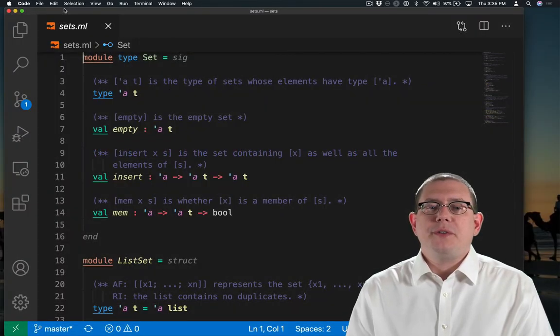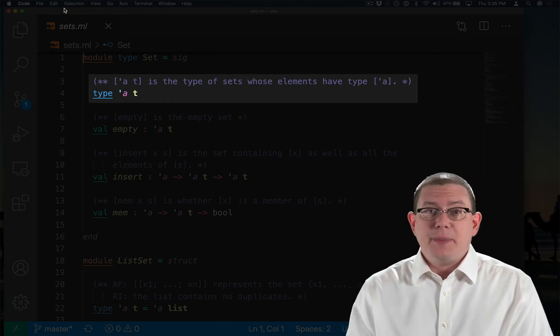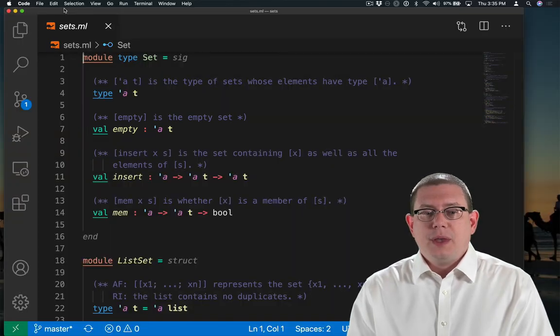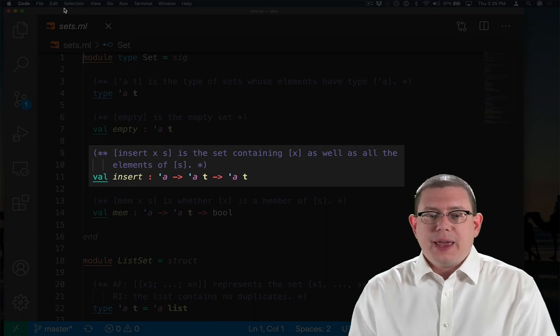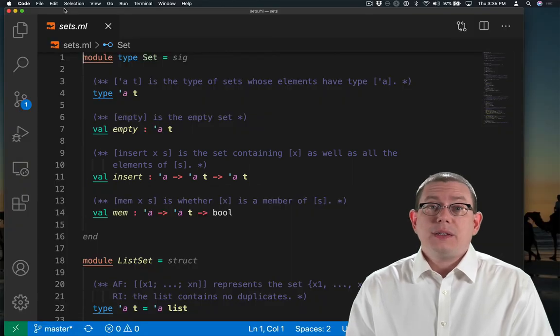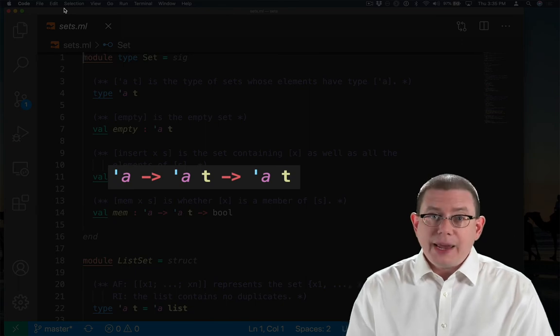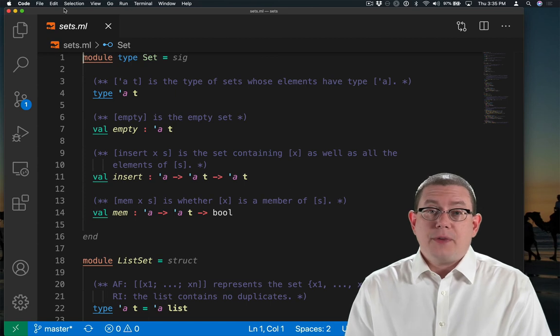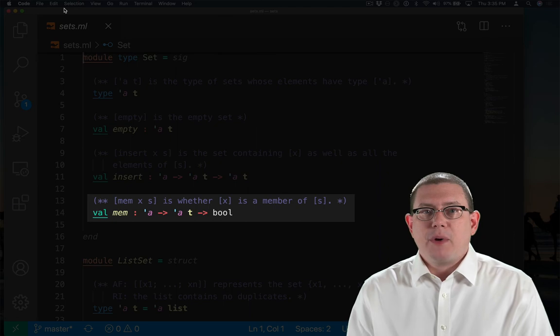We'll start off with a very small interface for sets. Alpha t is the type of sets whose elements have type alpha. Empty, as usual, will be the empty set. Insert will add an element to a set, so it will be the set containing x as well as all the elements of s. This is therefore a functional data structure. You can tell from the type it's not returning unit. It's taking in an old set and returning a new set. And finally, we'll have a find or a membership operation. Mem x s is whether x is a member of s.